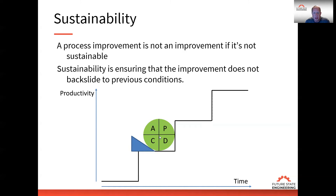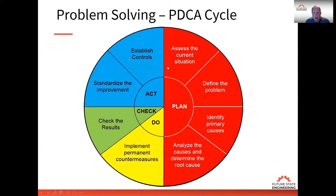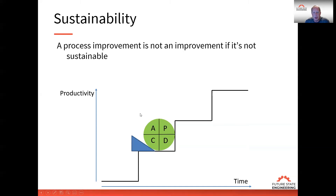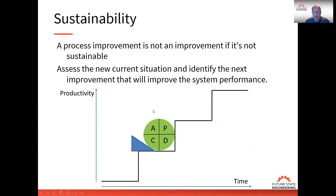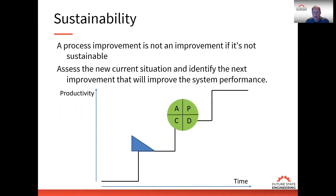Once we get to this higher level, we want to go back to our PDCA cycle again, assess the current situation, and build on the success of the previous improvement. We look for the next level of improvement to get us to the next level of productivity. We then go back to our PDCA, assess and identify things that are going to give us system improvement performance — not efficiency improvements, not cost reductions, but improvements of the system performance.